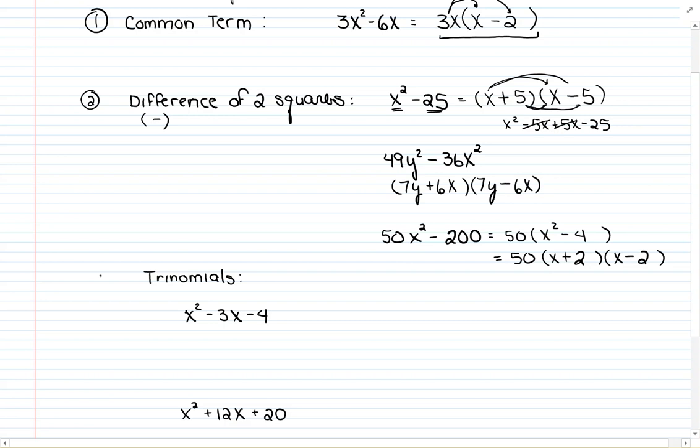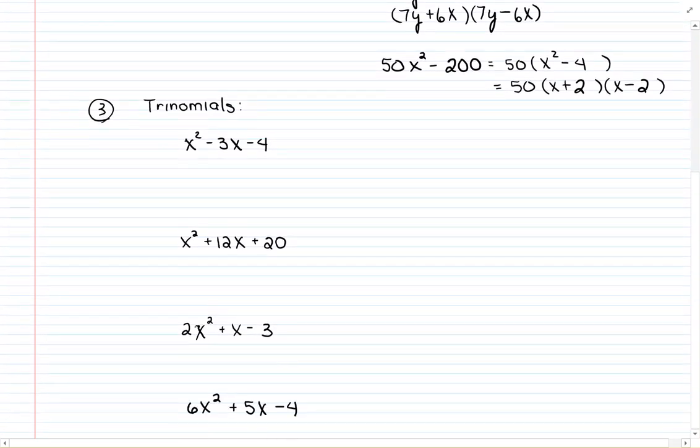For trinomials, we again look for a common term to factor out. If there is none, then I'm going to write down my two sets of parentheses and do a backwards FOIL or backwards distributive property twice on this. I look to the first term. How do I get x²? x times x.